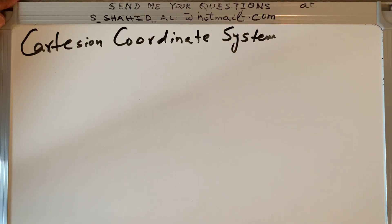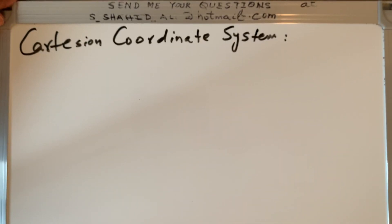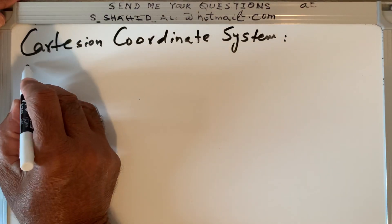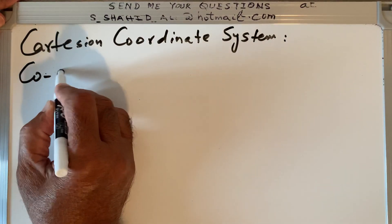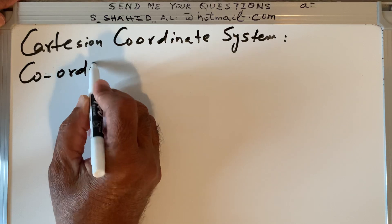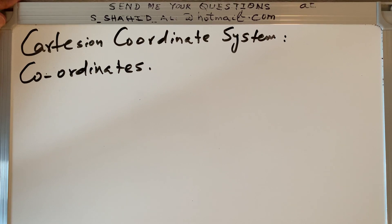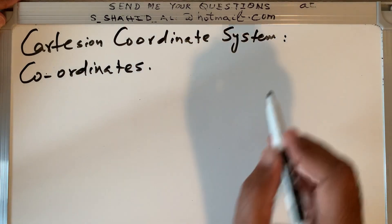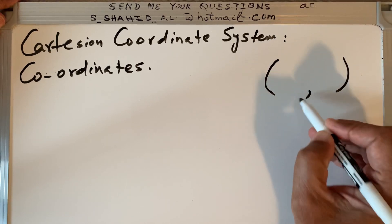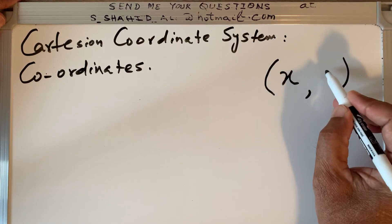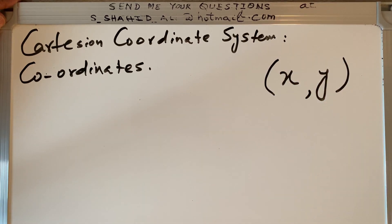This system specifies each point uniquely in a plane by a set of numerical coordinates. Coordinates are numbers represented in parentheses — the first number represents the x value and the second number represents the y value.